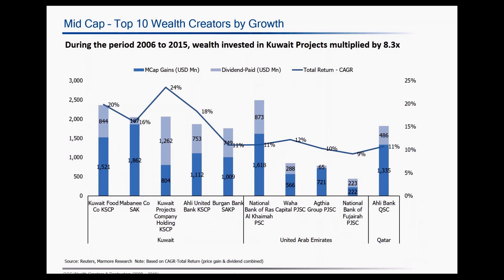These are the 10 companies identified. In terms of total return generated, Kuwait Projects — which is a holding company with interests in several companies — has generated the highest return of 24% CAGR during the 2006 to 2015 period. Wealth invested in Kuwait Projects has multiplied close to about eight times during this assessment period. The majority of wealth created for investors by this company comes through dividends, with close to about 1.2 billion paid in dividends and a relatively smaller amount generated through capital gains.